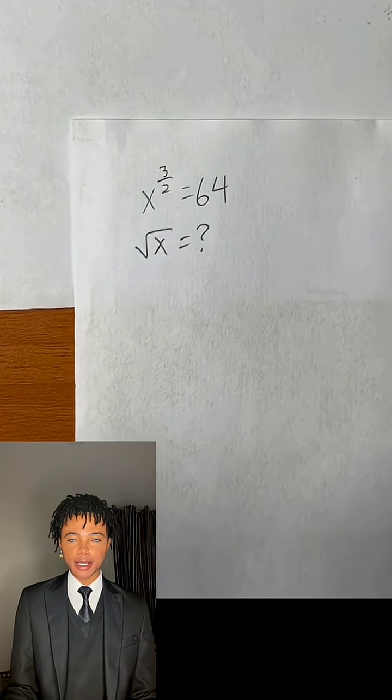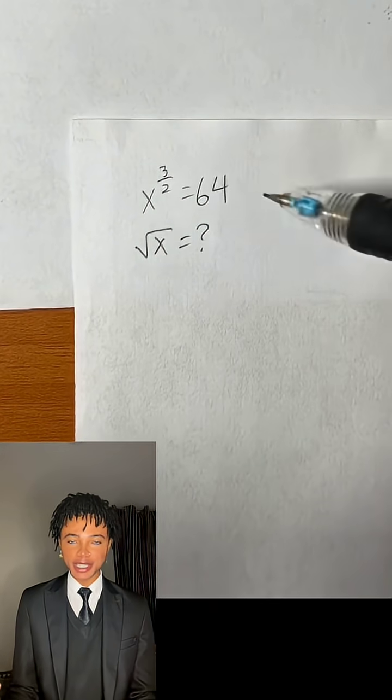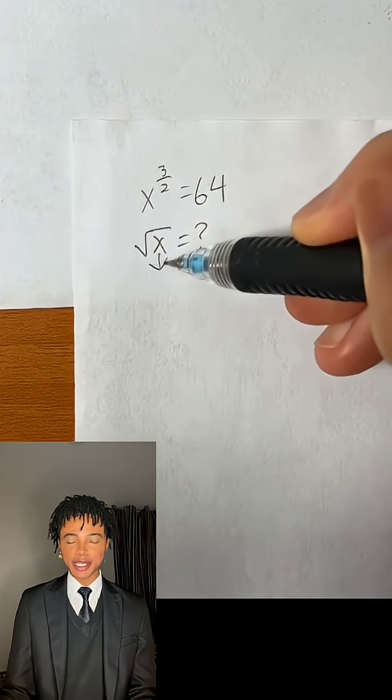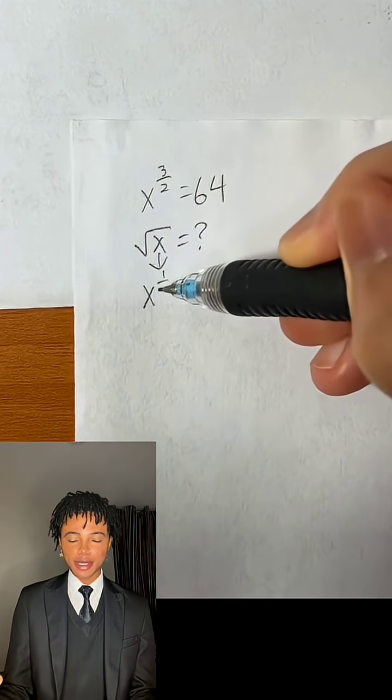So we have x raised to the 3 over 2 power equals 64, and what we're looking for is x, the square root of x, which is basically equal to x raised to 1 half power.